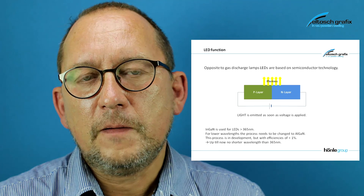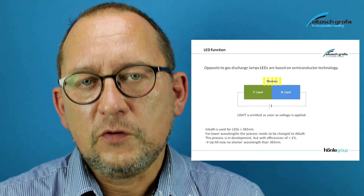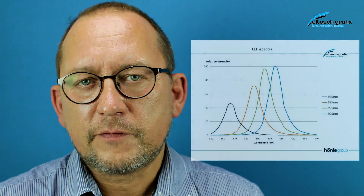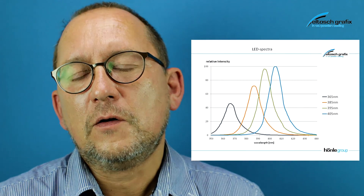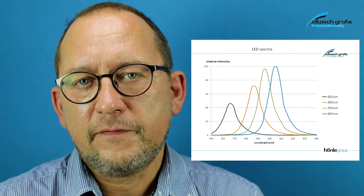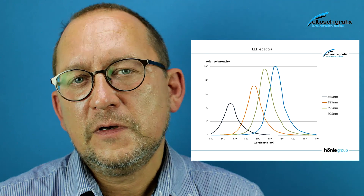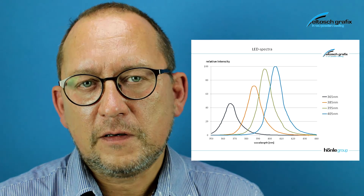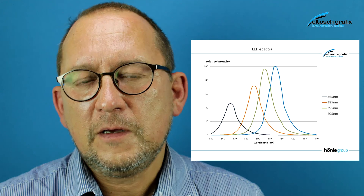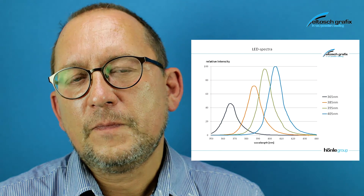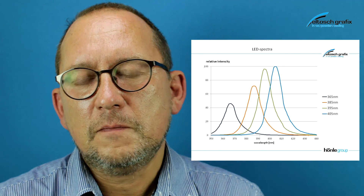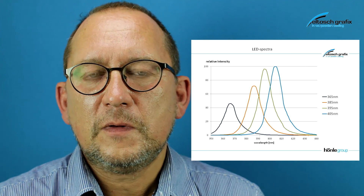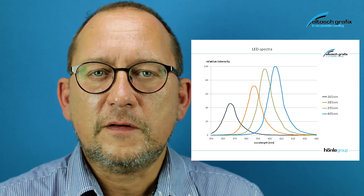UV LEDs are available and efficient in the UVA range, starting at 365 nanometers going up to 405 nanometers. In general, the shorter the wavelength of the LED, the less effective the LED is, meaning the effectivity is lower when the wavelength is lower.